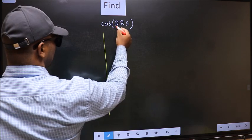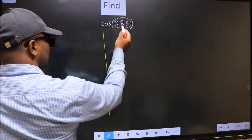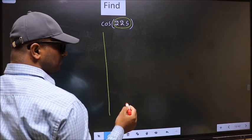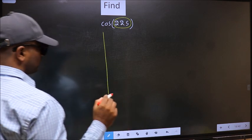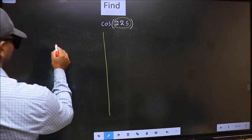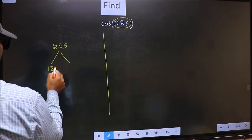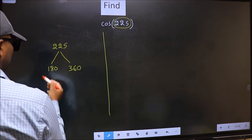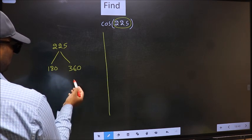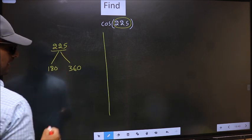Here we have 225. Now you should check which two multiples of 180 the number 225 lies between. What I mean is, 225 lies between 180 and 360. This is 180 times 1. This is 180 times 2. Between these two numbers, 225 lies.